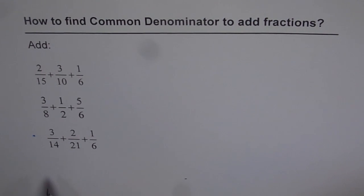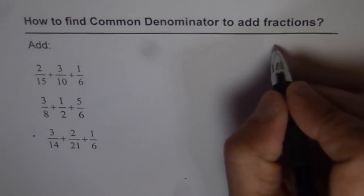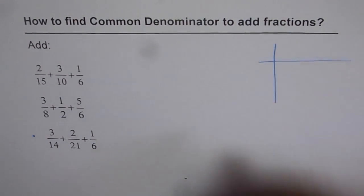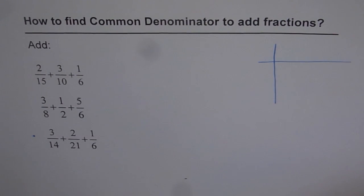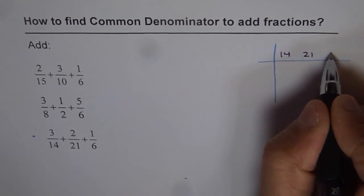What do you think is the least common denominator and how can we find it? Just as we did in the last video for two fractions, now for three fractions let's follow the method of ladder division. Ladder division gives you the least common denominator. We are trying to find the least common multiples to get our least common denominator. The numbers in the denominators are 14, 21, and 6.